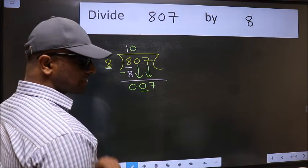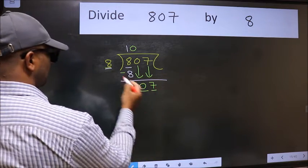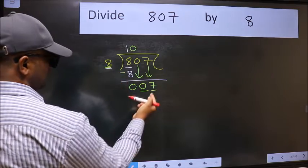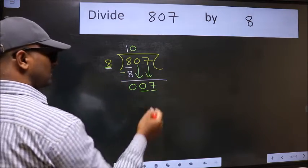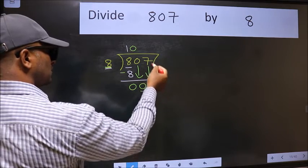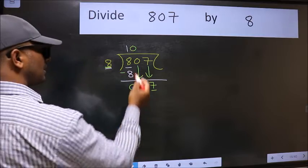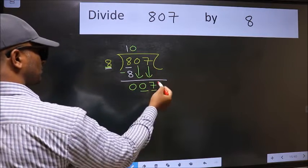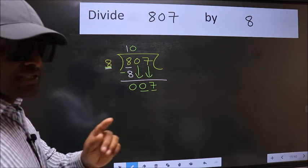After this step, the mistake happens. And the mistake is this. Here we have 7 and here 8. 7 is smaller than 8, and we don't have any more numbers to bring it down. So what many do is they directly put dot, take 0, which is wrong.